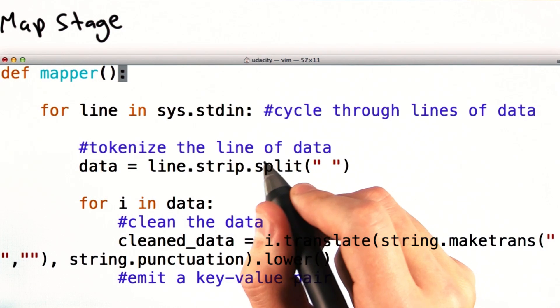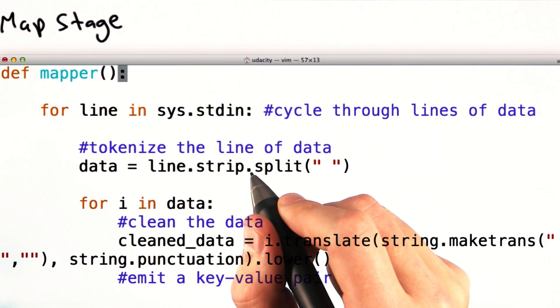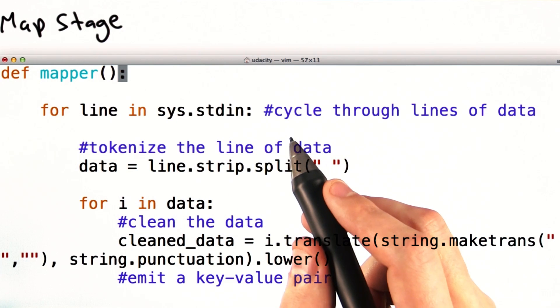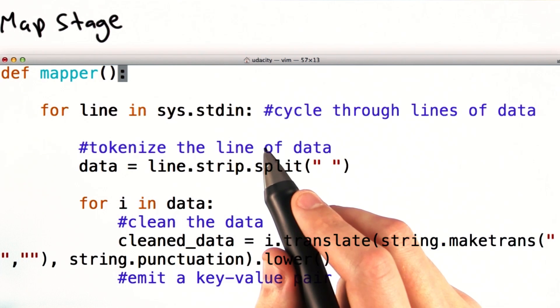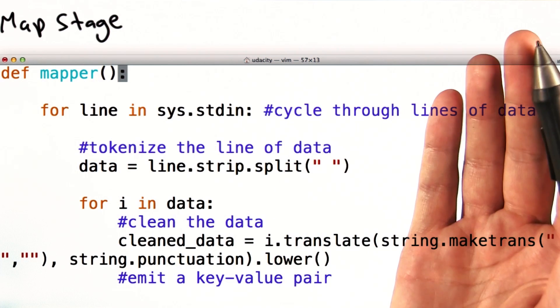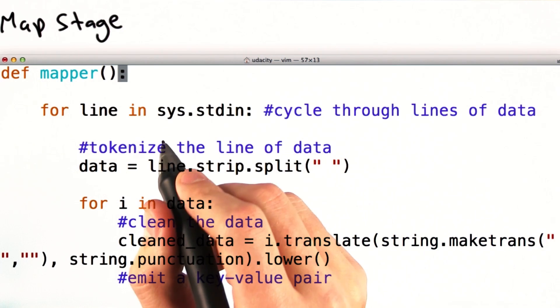The code you see below is a Python implementation of a mapper for our word count problem. Imagine we have a huge document filled with many lines of words. We can send different chunks of the document to a number of different mappers to get the job done. What's this mapper code doing? Let's take a closer look.